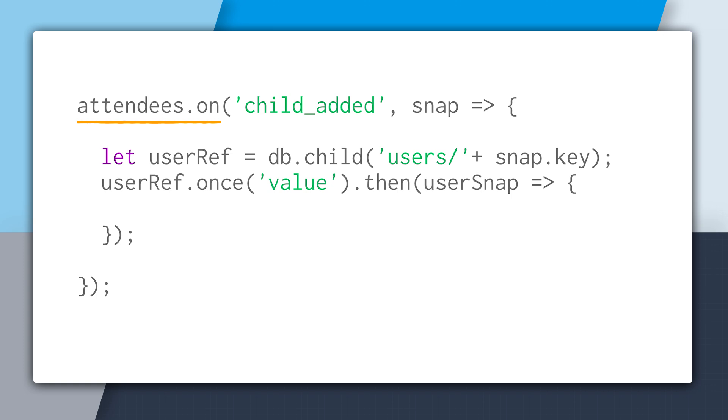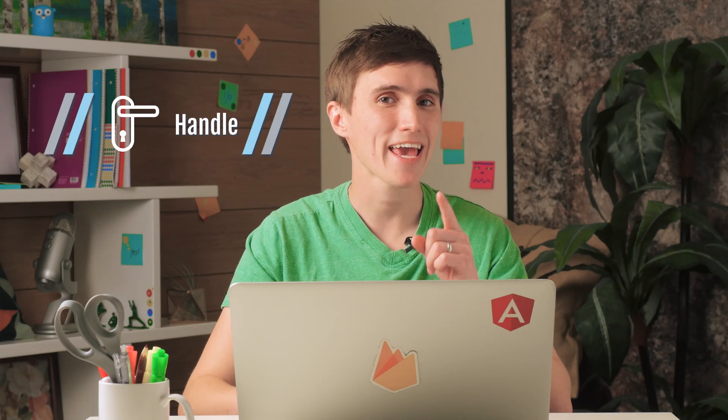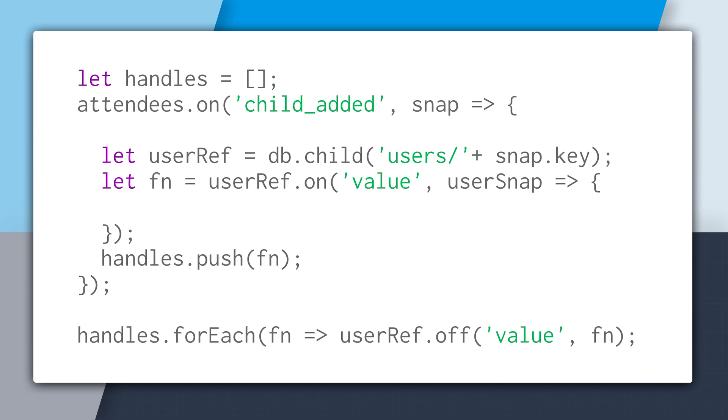Using on value, this will listen to updates for the user in real time. But when you use an on method, you always need to be able to dispose of it. If you no longer need to listen to these updates in real time, you can call ref.off with the handle, and that way you aren't listening to that user anymore. When you listen using the on method, a handle is returned to you. Inside of each child_added callback, we're creating a new real-time listener, so this is a new handle we have to keep track of for each attendee.